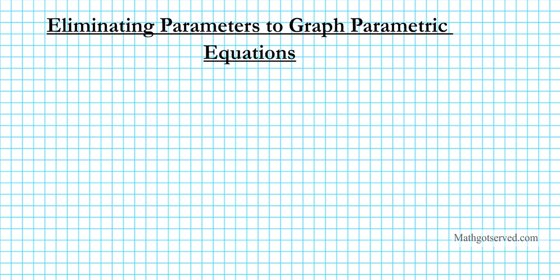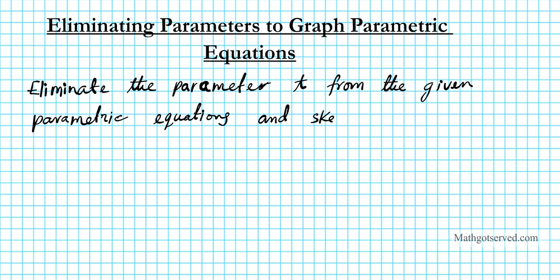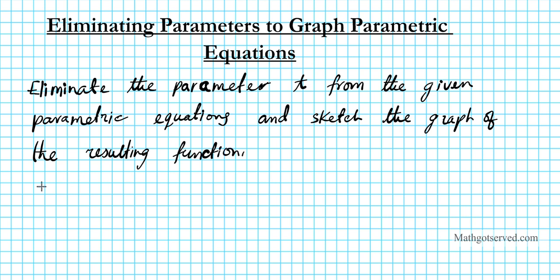This instruction applies to all the examples. Basically, we're going to eliminate the parameter t from the given parametric equations, and sketch the graph of the resulting function. Alright, so let's go ahead and take a look at the first example, number one.